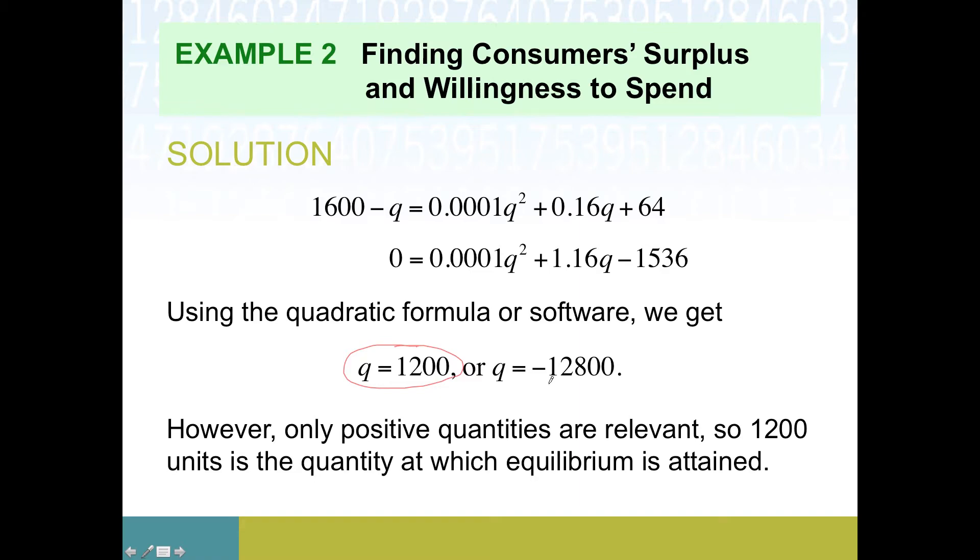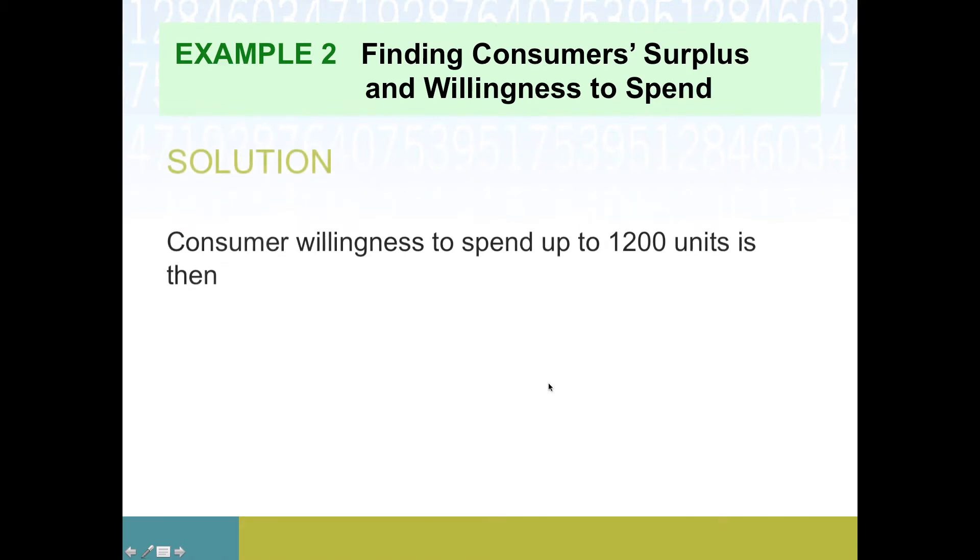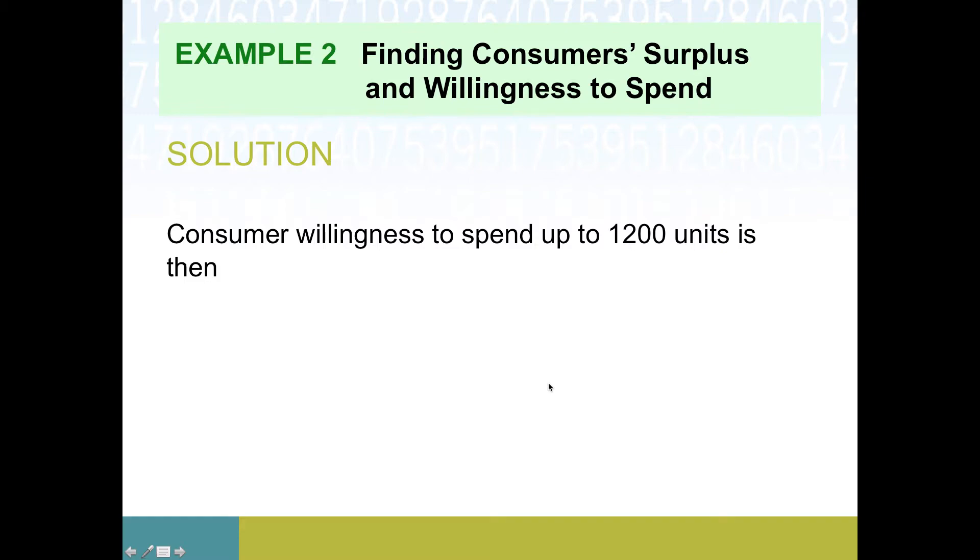Our first task was consumer willingness to spend. We have determined that it's twelve hundred units where market equilibrium is going to happen. So that willingness to spend looks like the area underneath the demand curve. So the integral of D(q), Q naught is our cutoff point. Here's our demand function we were actually handed.